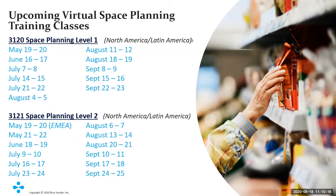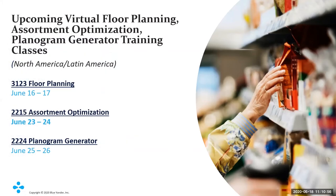Upcoming classes for North America and Latin America include a list of space planning level one public classes — all being done virtually right now — as well as space planning level two classes for North America, Latin America, and an EMEA class as well. We've also added public floor planning, public assortment optimization, and public planogram generator classes. If you want to sign up or have questions, email training@blueyonder.com or go to training.blueyonder.com.